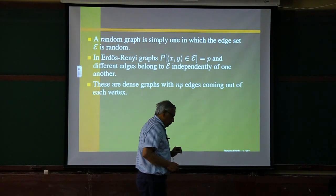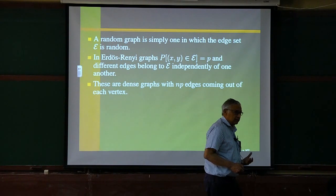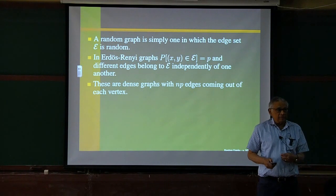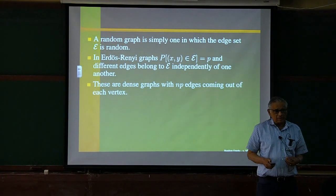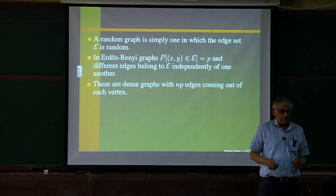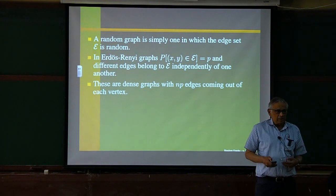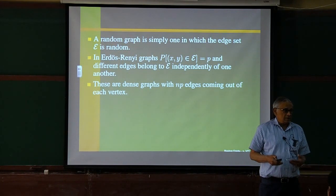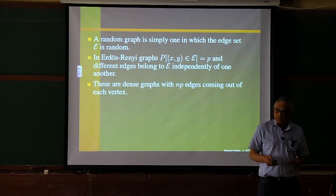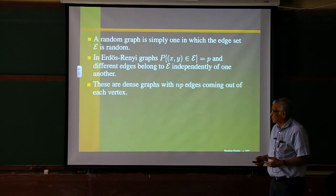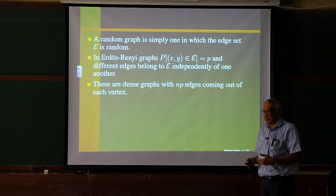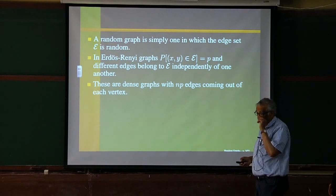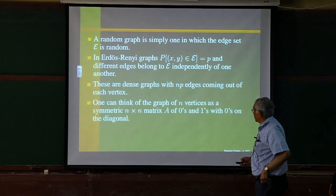We are going to keep P fixed and let N go to infinity. In the original model that Erdős and Rényi considered, P varied with N and typically P was like constant over N, meaning the expected number of edges coming out of a vertex is constant. So these are called dense graphs.